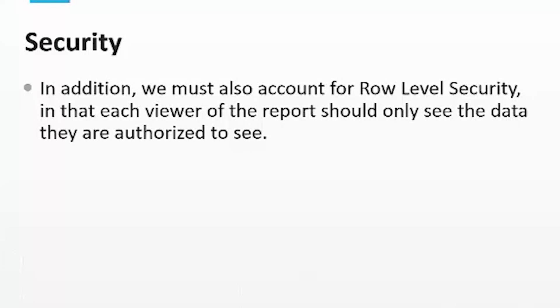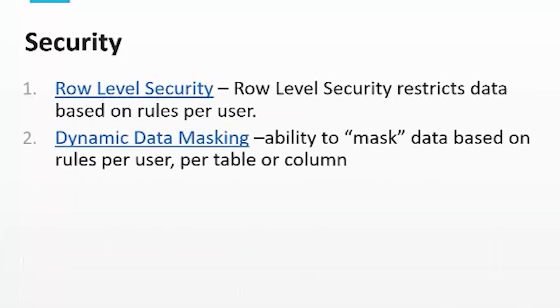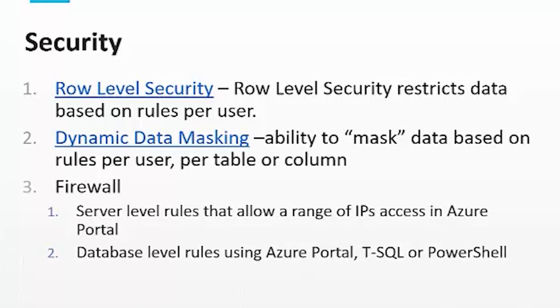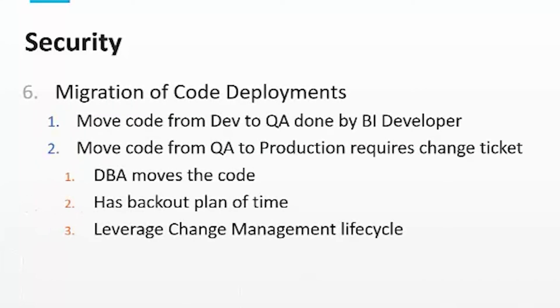Another feature is row-level security. In a sales department you may have a director, a manager, and a salesperson — the director sees everything — and Microsoft makes row-level security very easy to implement. We also have dynamic data masking for sensitive data, firewalls to secure the data, and in Power BI you need to think about folder structure, permissions, and data refreshes. Code deployments — moving from dev to QA to prod — require tickets, change control, and a management ticketing system so you can see who did what when.